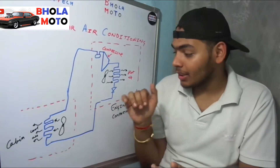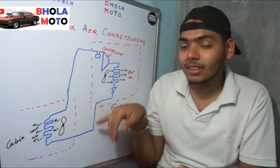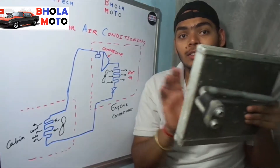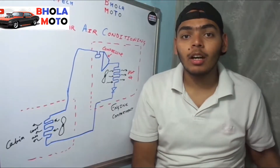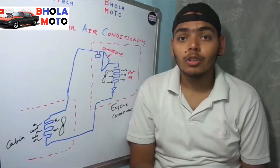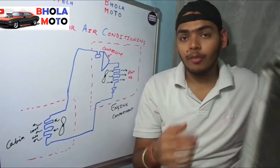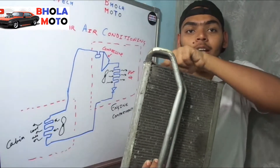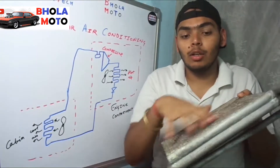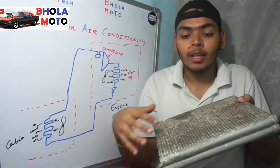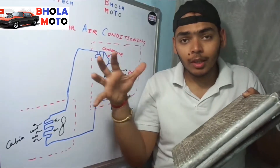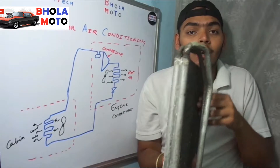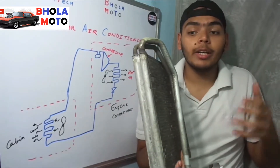When the temperature decreases, these gases become cool, and when these gases are passed through this heat exchanger — which is placed inside your cabin inside the dashboard — the hot air of the cabin is blown in from one side and on the other side you get the cold air.